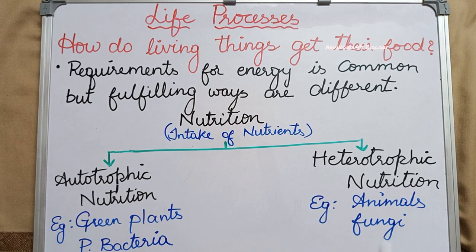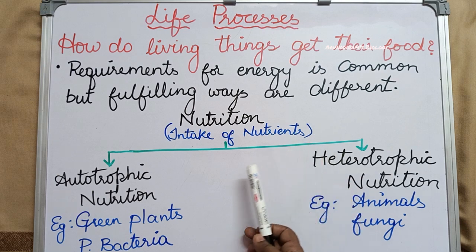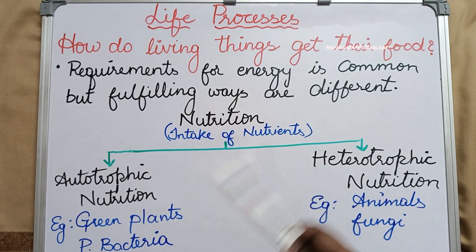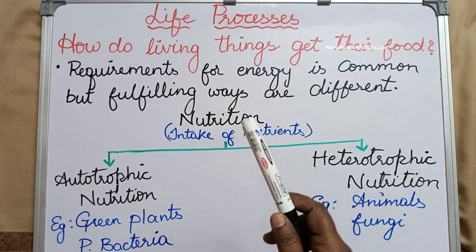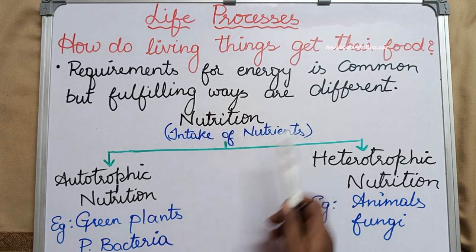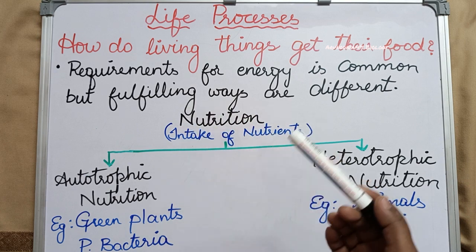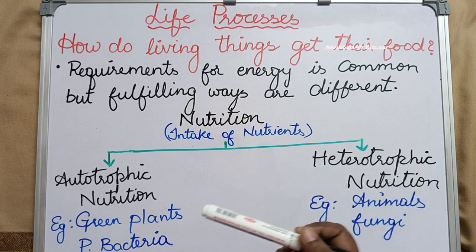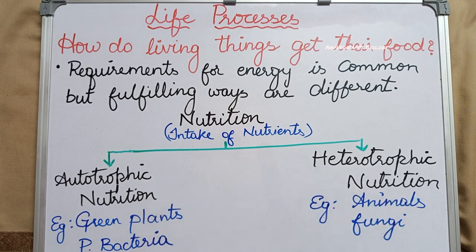How do living things get their food? The requirement for energy is common in all living organisms on this earth — every living organism needs energy and takes food materials for getting that energy. But the ways of fulfilling this need are different. Different organisms choose different methods to obtain nutrition. There are two types of nutrition: autotrophic nutrition and heterotrophic nutrition.